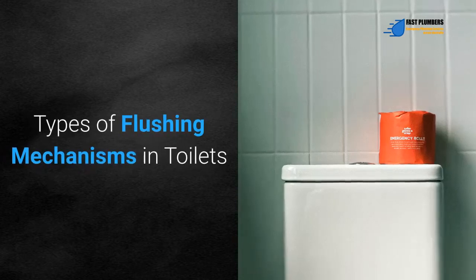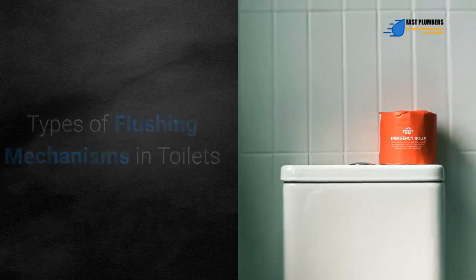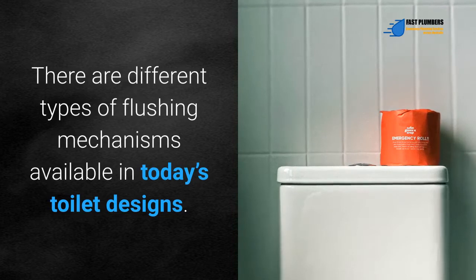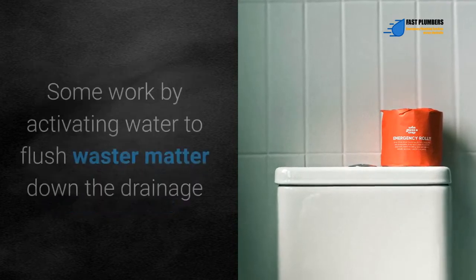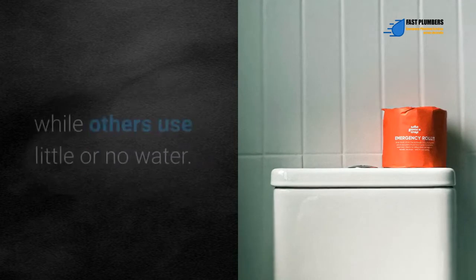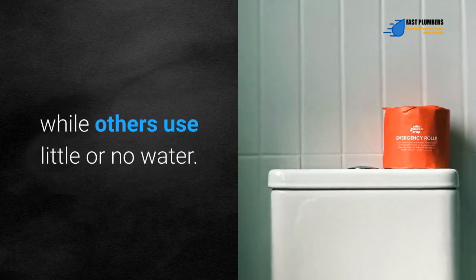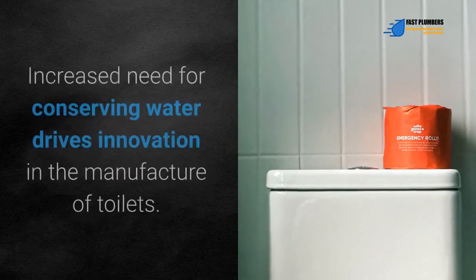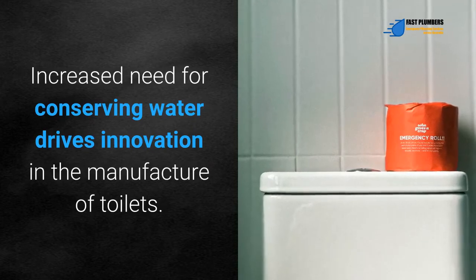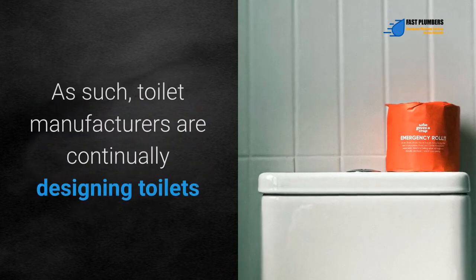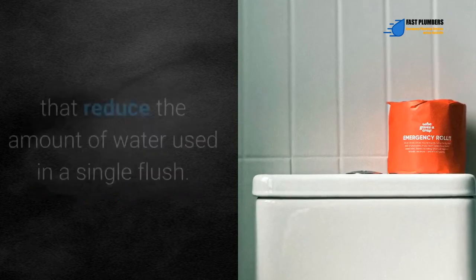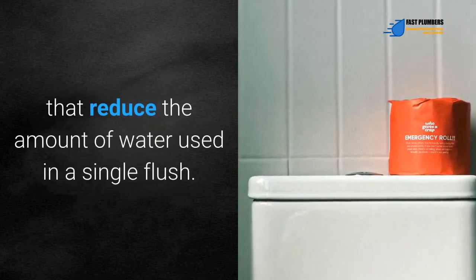Types of flushing mechanisms in toilets. There are different types of flushing mechanisms available in today's toilet designs. Some work by activating water to flush waste matter down the drainage while others use little or no water. Increased need for conserving water drives innovation in the manufacture of toilets. As such, toilet manufacturers are continually designing toilets that reduce the amount of water used in a single flush.